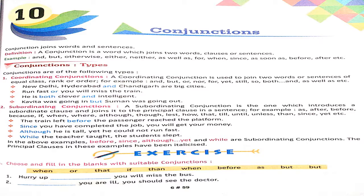I am just telling you the examples also so that you will be understanding. First one, coordinating: New Delhi, Hyderabad and Chandigarh are the big cities. So these three are the big cities coordinating with each other.